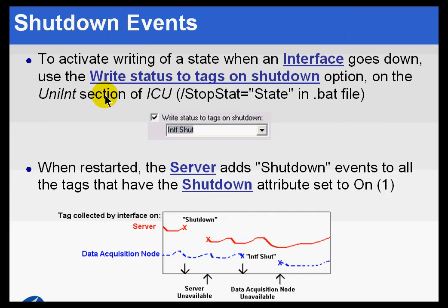What we're specifying here is if we choose to check that field and then choose a digital state, then when the interface shuts down, we will write that value into the PI system or the PI archive for all the tags collected by that interface.